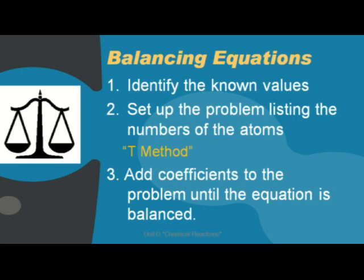We can follow several simple steps to balancing chemical equations. The first is to identify the known values, which includes writing down the equations. The second step is to list all the numbers of each atom per element. We use the t-method in class, and we describe that at length to make sure that all the elements are represented. The third thing is to add coefficients to the problem until the equation is balanced.